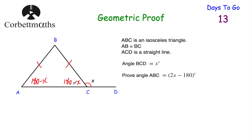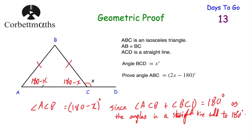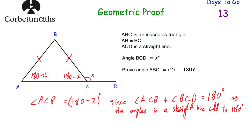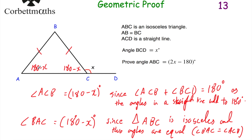So angle ACB equals 180 minus X, since angles ACB and BCD add together to be 180 degrees — angles on a straight line. Then angle BAC equals 180 minus X, since triangle ABC is isosceles and the two base angles are equal, meaning angle BAC equals angle ACB. Now our last step is to add these two angles and subtract from 180 to find angle ABC.